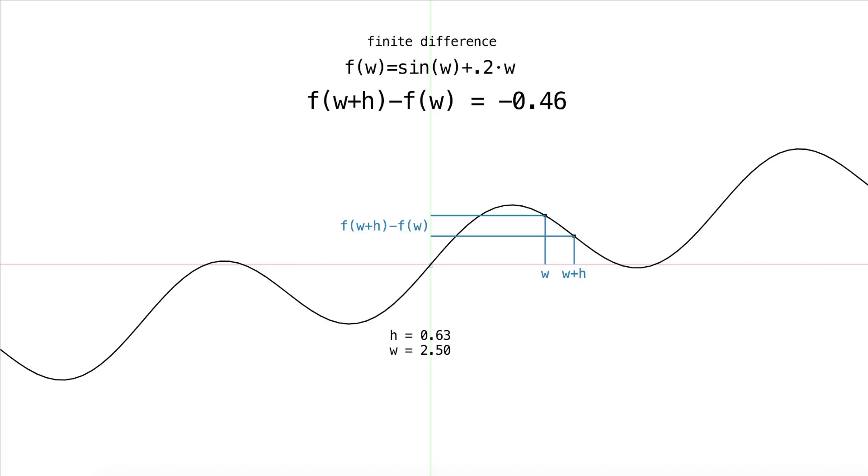It's a way to approximate the slope or derivative of our reward function, and if we have that, we can use it to update the weights of our agent to increase the reward. So here, I'm taking a small fraction of the finite difference and adding it to w every time step.